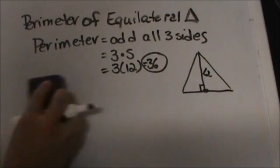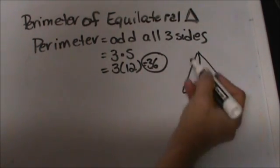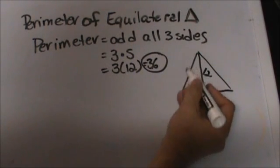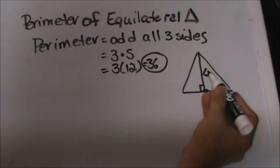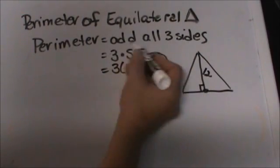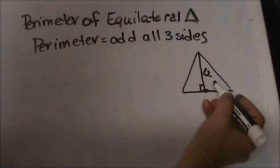Because if you notice if we draw an altitude down we have a right triangle and that is a leg of a right triangle. Then we know that the hypotenuse is always the longest side. So we need to figure out the length of the side so we can multiply by three to get the perimeter. So let's work this one backwards.